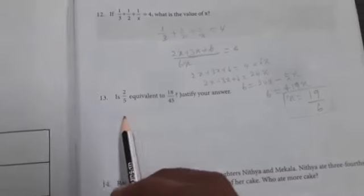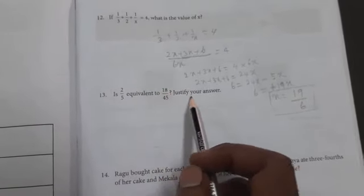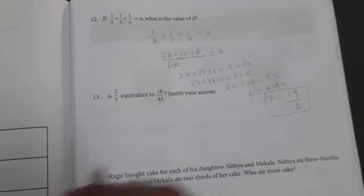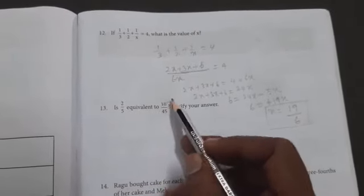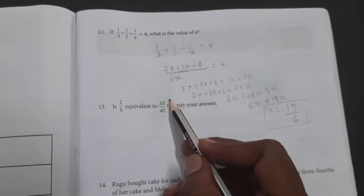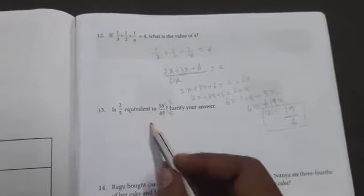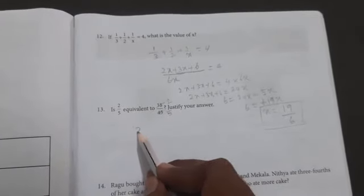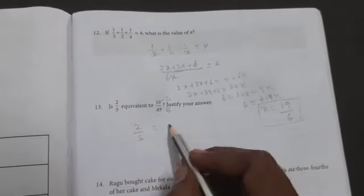Next question number 13: Is two by five equivalent to 18 by 45? Justify your answer. If you simplify, 9 times 2 is 18, 9 times 5 is 45. So two by five equals 18 by 45 simplified. Two times and five times are in the 9 table, so two by five is equivalent to 18 by 45.